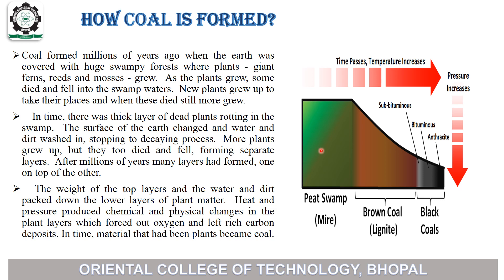As shown in the figures, this is the peat swamp. These are the brown coal, which is lignite. As temperature and pressure increase, this changes into different varieties of coal like subbituminous, bituminous, and anthracite.